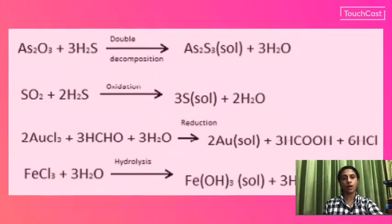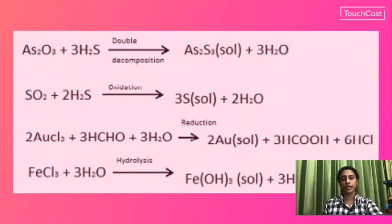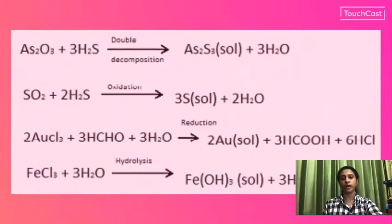The second chemical method is oxidation: sulfur dioxide and hydrogen sulfide react to produce a sulfur sol. The third method is reduction: auric chloride is reduced to produce a gold sol. When formaldehyde and water react with auric chloride, a gold sol — AU sol — is formed.